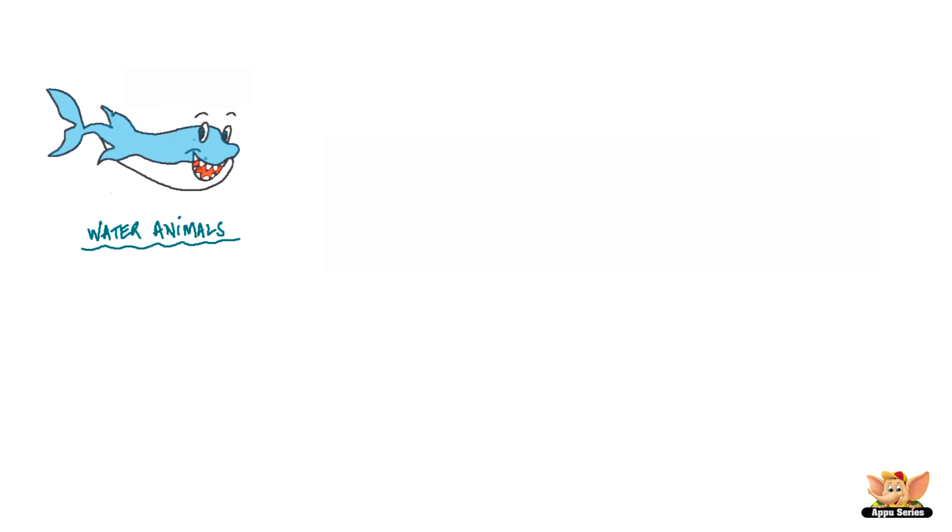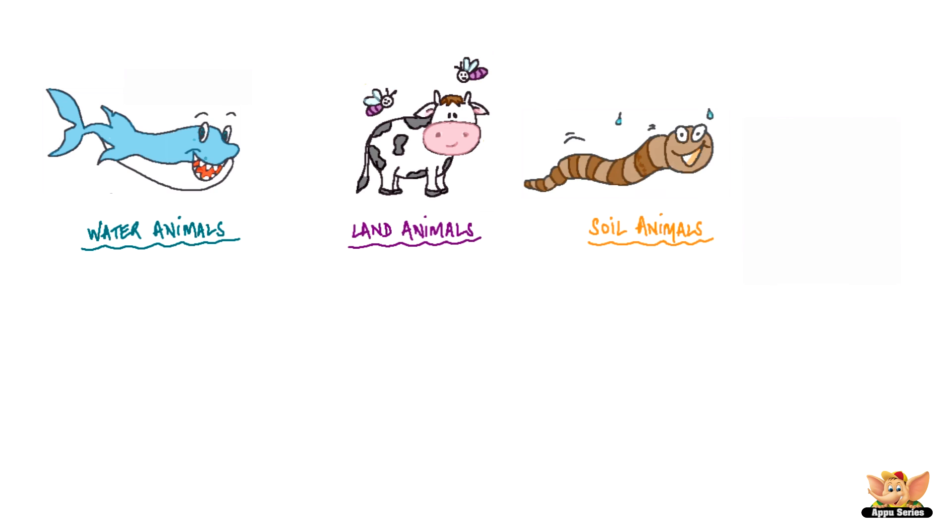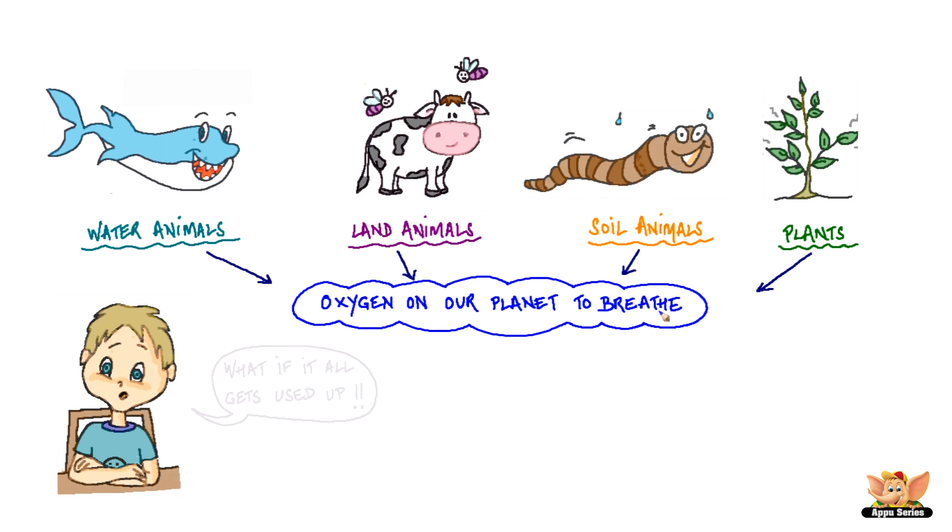Water animals, land animals, soil animals and plants—all living beings are using up the oxygen on our planet to breathe. What if all of this gets used up?